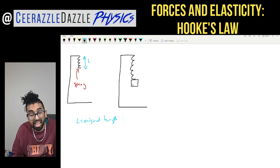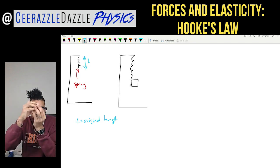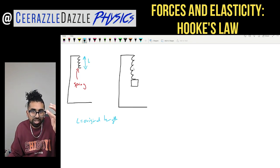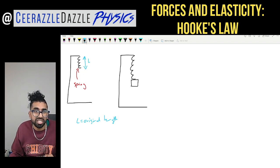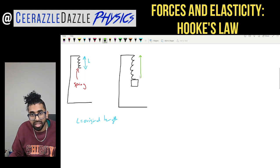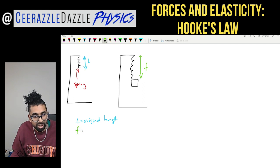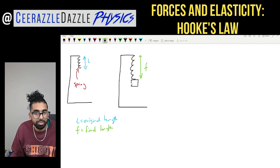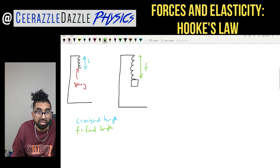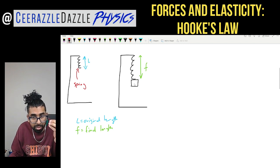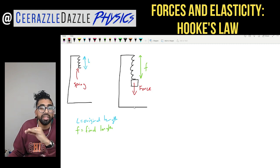We're going to add a mass to the end of the spring. Obviously that mass will drag the spring down. As it drags the spring down, the spring will extend to a new length. Let's label this final length lowercase f. That object attached to the end of the spring is supplying a force, pulling the spring downwards.